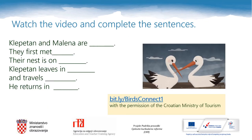The most popular couple of storks in Croatia are Klepetan and Malena. Please copy the sentences that you can see on this slide: Klepetan and Malena are... They first met... The nest is on... Klepetan leaves in... and travels... He returns in... Please guess the words that are missing from the sentences. Then copy the link on the right-hand side of the slide — bit.ly/birdsconnect1 — copy the link, watch the video, listen carefully, and complete the sentences after watching.